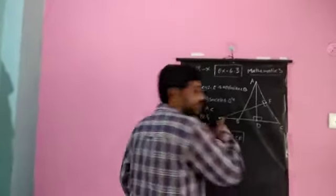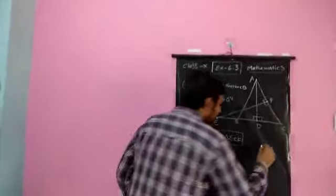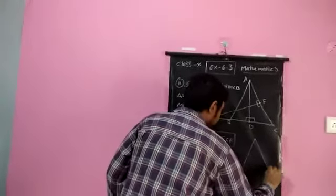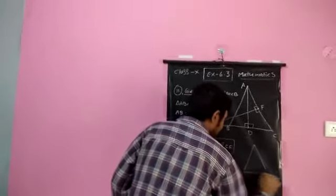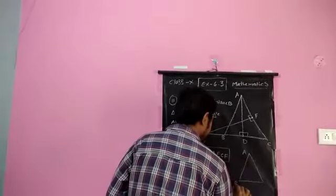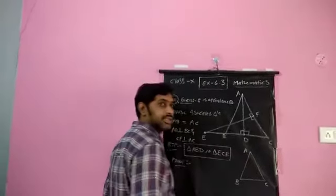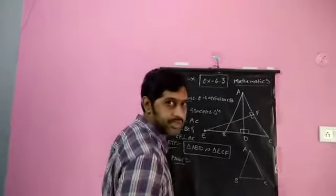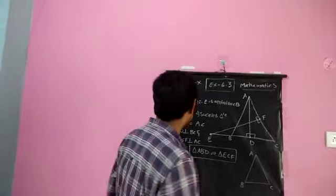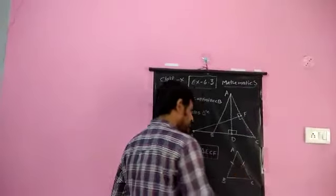I'll start with the hint given: AB equals AC. In triangle ABC, which is an isosceles triangle, the two sides which are equal are AB and AC.